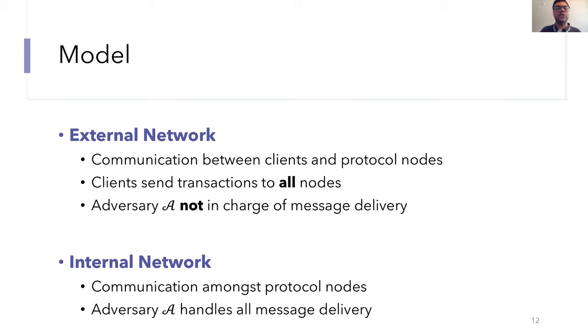We also assume that the adversary is not in charge of the message delivery here. So intuitively, this makes sense because otherwise it would essentially imply that the adversary is in charge of the client's connection to the internet. The adversarial assumptions for the internal network are standardly modeled. Basically, the adversary handles all of the message delivery and can reorder messages but can't drop messages. It also moves last in every round, so it can see the broadcast from other nodes before deciding on its own messages.